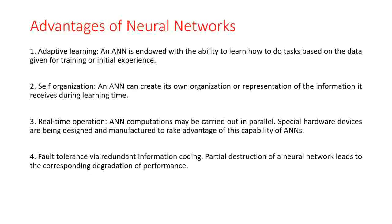Next are the advantages of a Neural Network. With their remarkable ability to derive meaning from complicated or imprecise data, Neural Networks can be used to extract patterns and detect trends that are too complex to be noticed by humans or other computer techniques. A trained Neural Network can be thought of as an expert in a particular category of information it has been given to analyze, and can be used to provide projections in new situations and answer what-if questions. Other advantages of working with an Artificial Neural Network include: Adaptive Learning, Self-Organization, Real-time Operation, and Fault Tolerance via Redundant Information Coding.